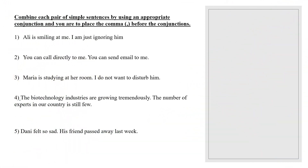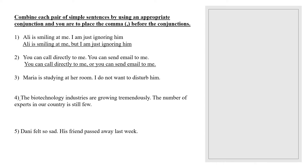Now for the exercise — combine each pair of simple sentences using an appropriate coordinating conjunction, and place the comma before the conjunction. Number one: 'Ali is smiling at me' and 'I am just ignoring him.' The answer is: 'Ali is smiling at me, but I am just ignoring him' — we use 'but' because these are contrasting ideas. Number two: 'You can call directly to me' or 'you can send an email to me' — this is an option or alternative, so you use 'or'.